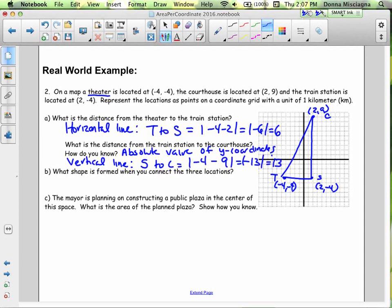What shape is formed when you connect the three locations? I think you can see that we have a triangle. And matter of fact, anytime you connect 3 points, you create a triangle.